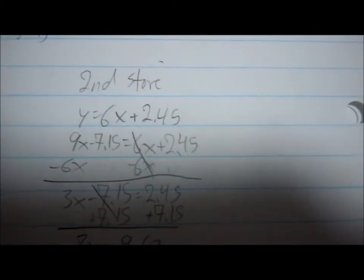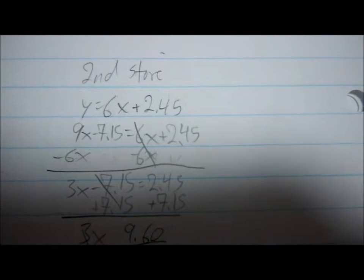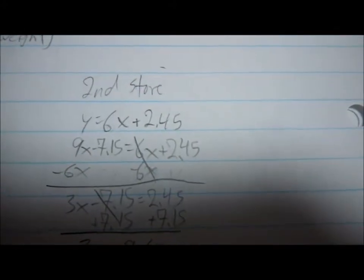What I'm going to do now is try to get x alone. So I will plug in the y from here, 9x minus 7.15 into here, the second store equation. So 9x minus 7.15 equals 6x plus 2.45.